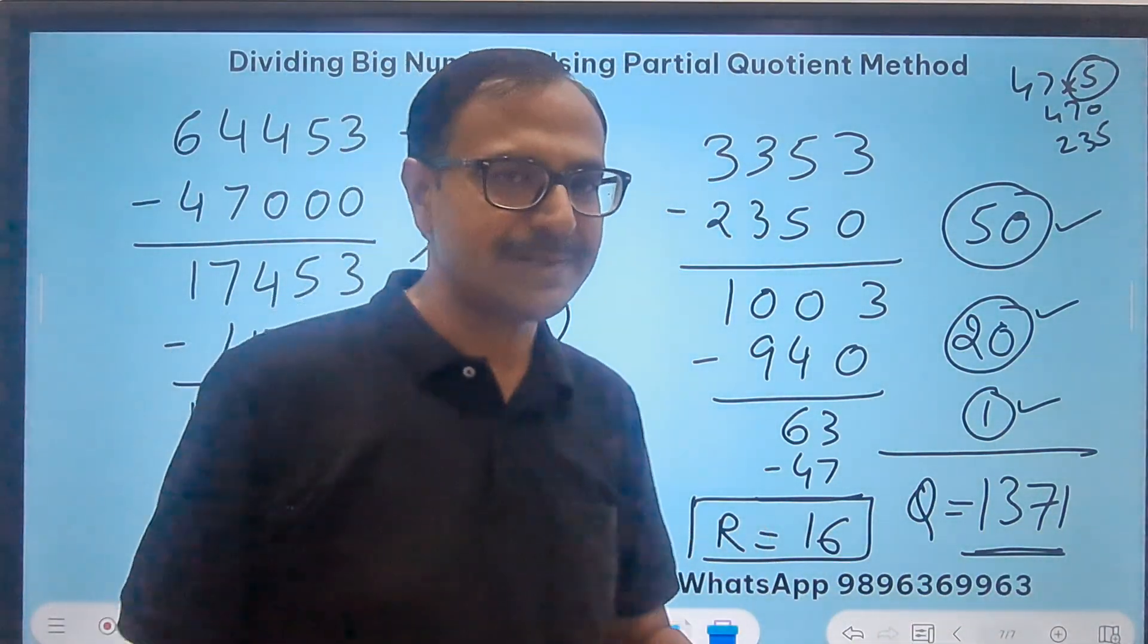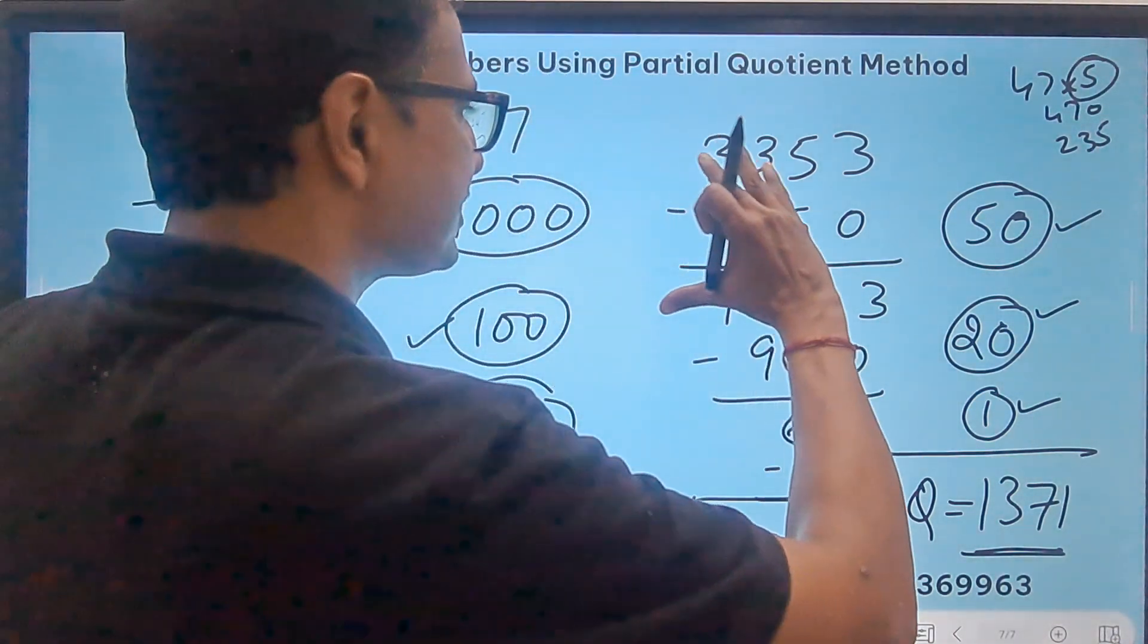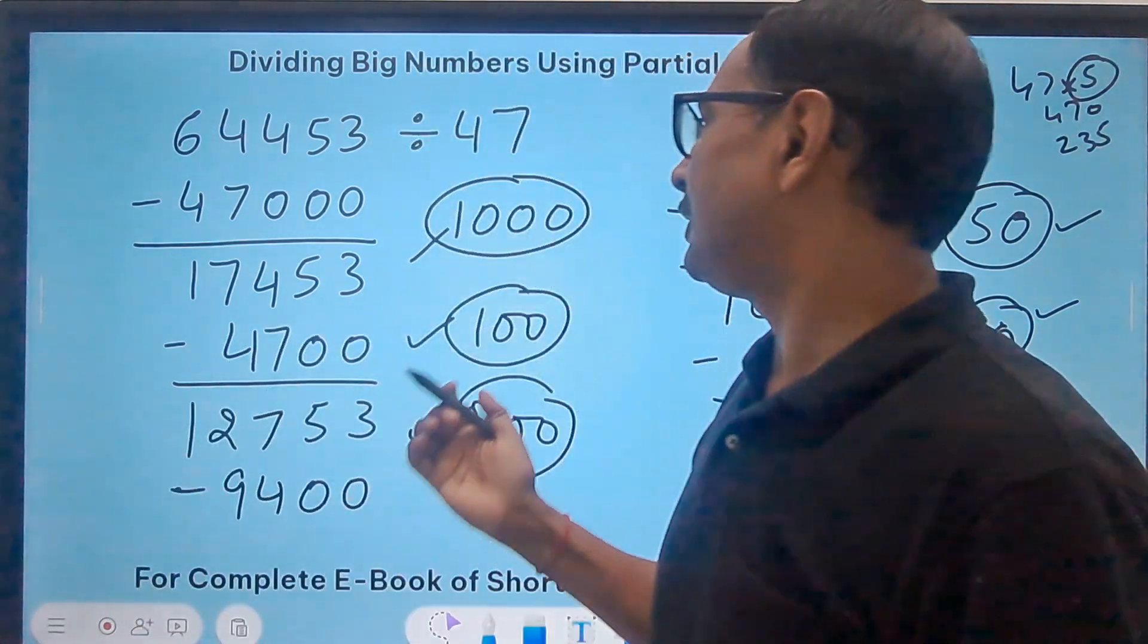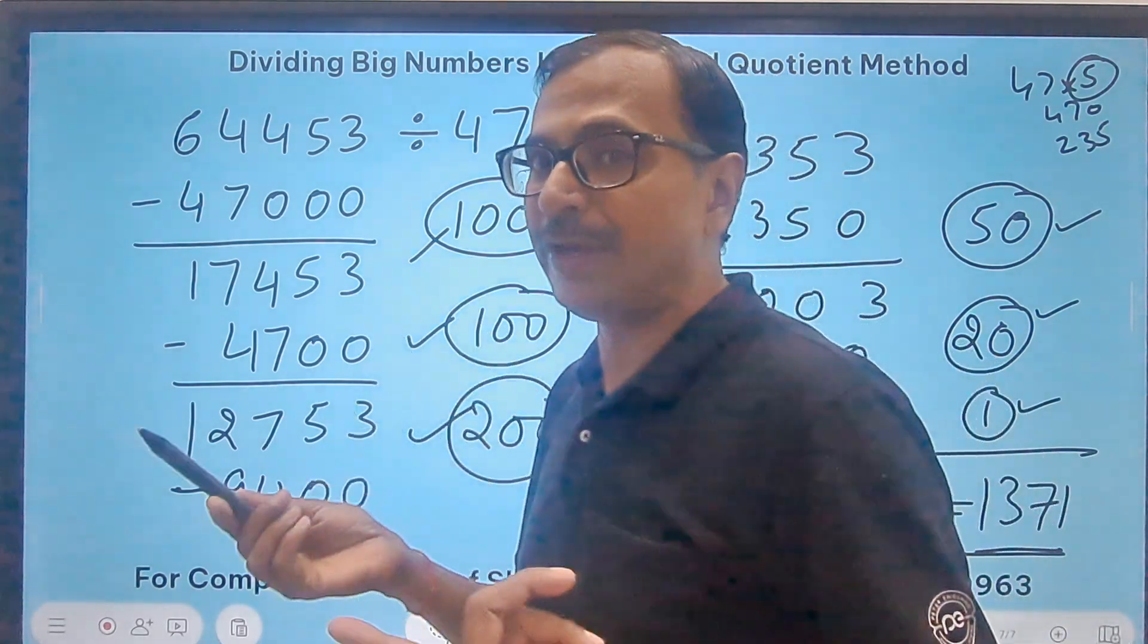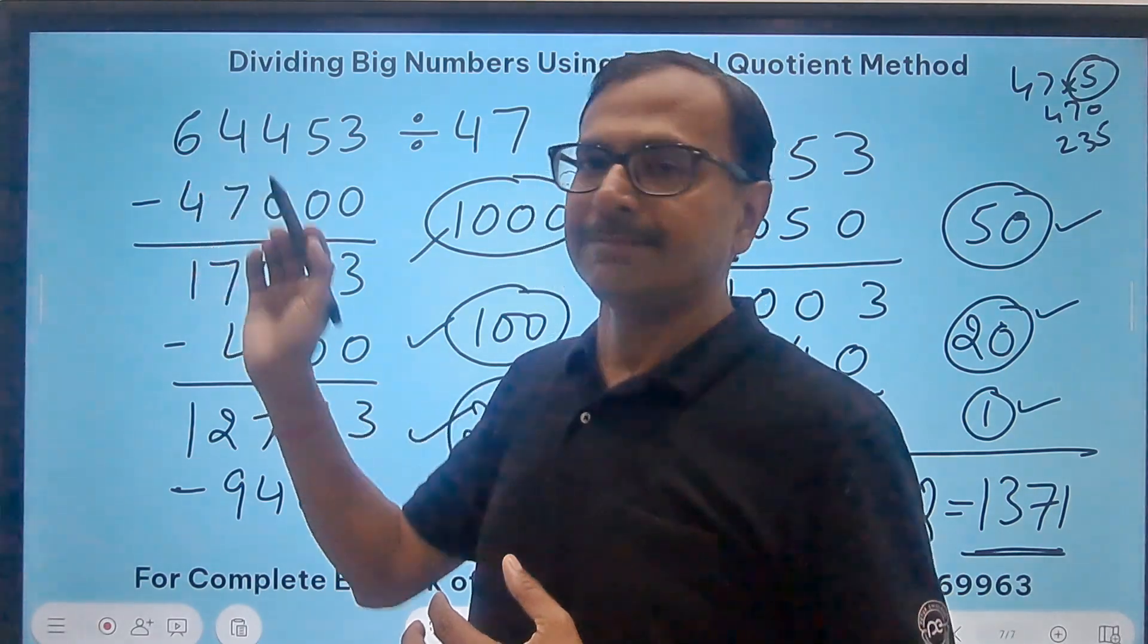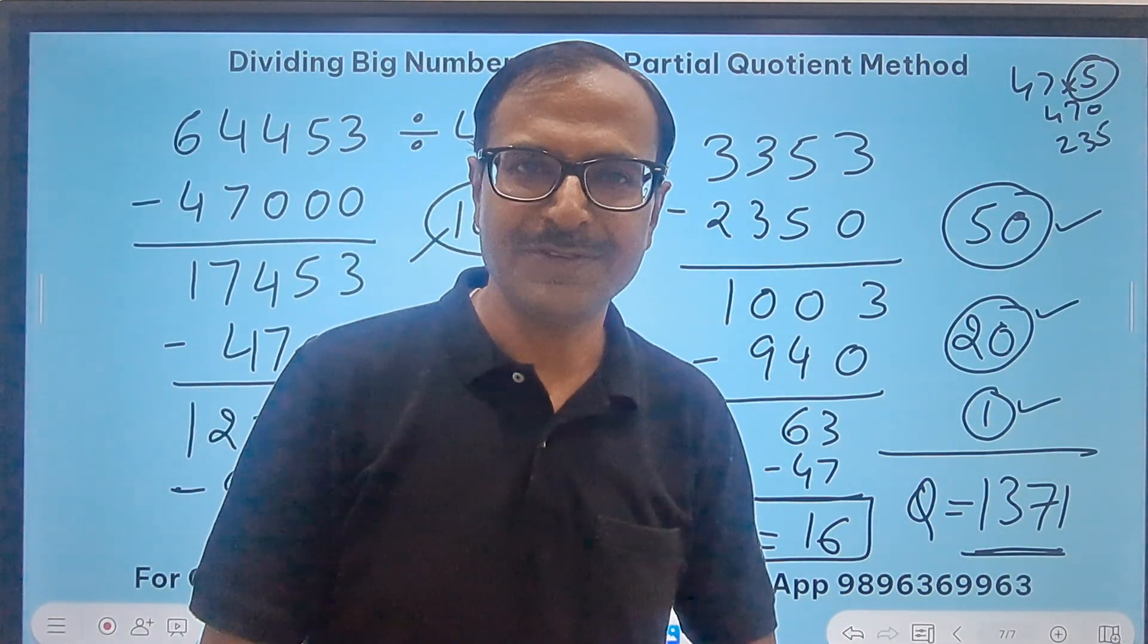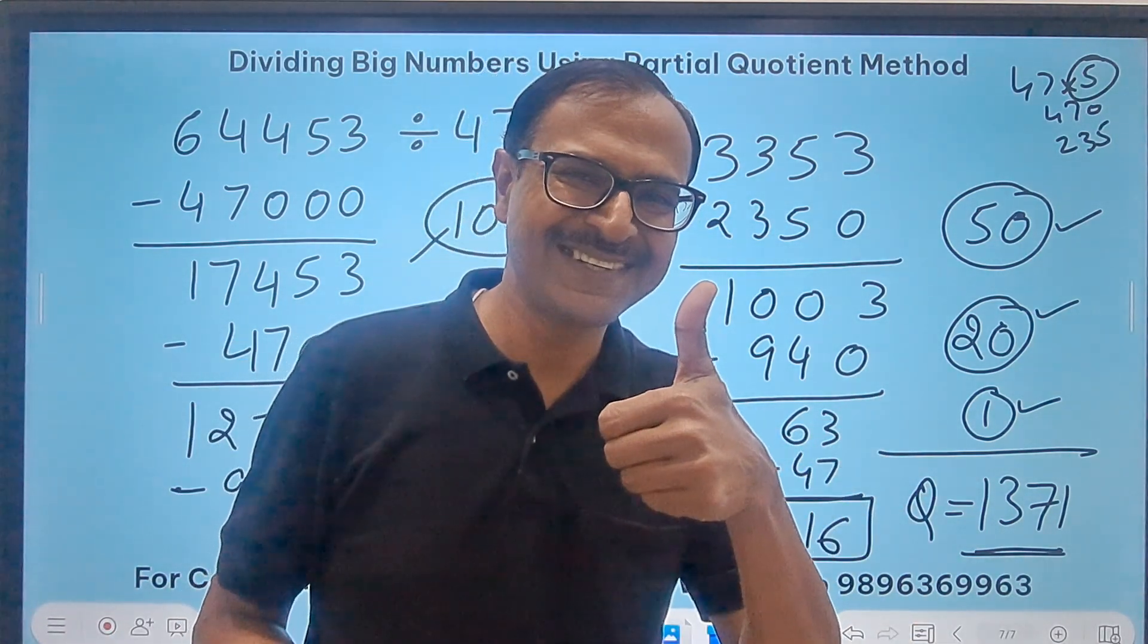A little bit of practice is required. As you practice, the number of steps are going to reduce. I took so many steps because I wanted to explain it to you, but you may be doing 47 into 1500 if you feel more comfortable. The closer you get to this number, the fewer steps you need. This is called the partial quotient method of division. Practice 20 to 30 such questions and let me know in the comments if it benefited you. All the best!